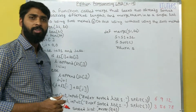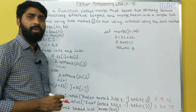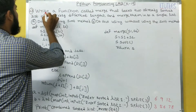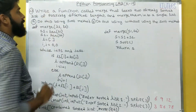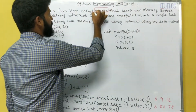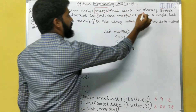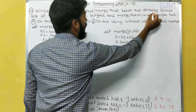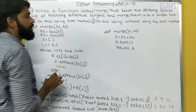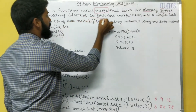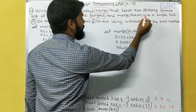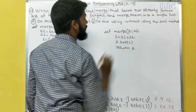Hello friends, welcome to our channel. Now we are going to solve one Python program. Write a function called merge that takes two already sorted lists of possibly different lengths and merge them into a single list.